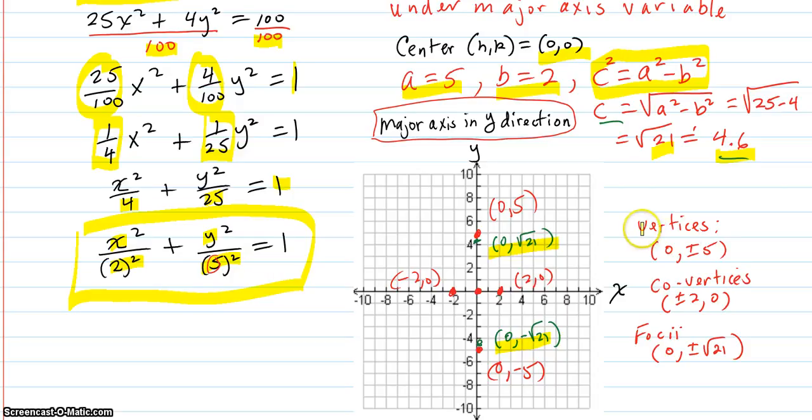Then I just wrote them all in a nice list here. Here's the vertices: 0, plus or minus 5. That's that one and that one. Co-vertices, plus or minus 2, 0. That's this one and this one. And the foci, 0, plus or minus square root of 21. That's the green and the green.